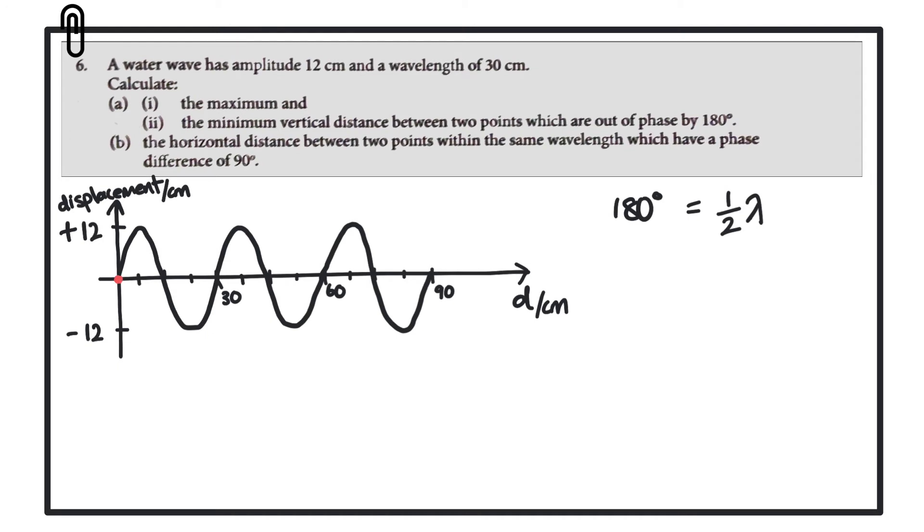Let's look first of all at zero. When we begin at zero, the displacement is zero. If we look half a wavelength later, so 180 degrees out of phase, that would be 15 centimeters, well then we can see that the vertical distance there is also zero. So the difference between those two points is zero and that is actually a minimum value. That's a minimum separation.